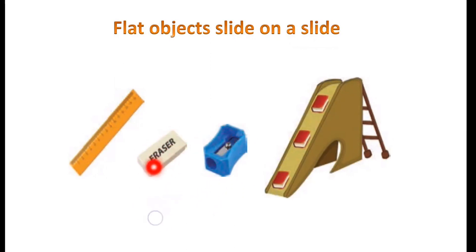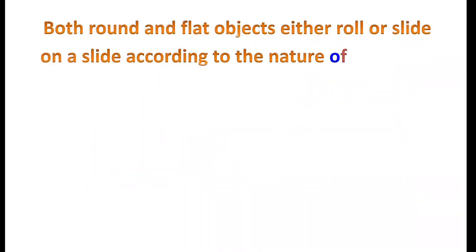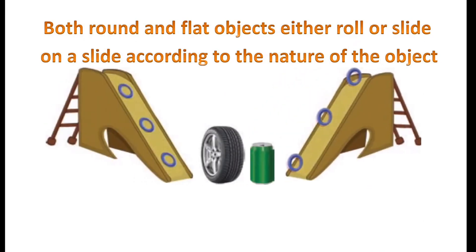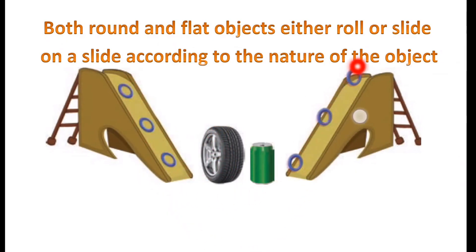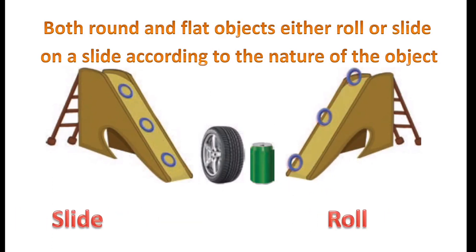These are all flat objects because they have a flat surface, so flat objects slide on a slide. Both round and flat objects either roll or slide on a slide according to the nature of the object. Objects with flat surfaces will slide, and objects with a round, curved surface will roll.